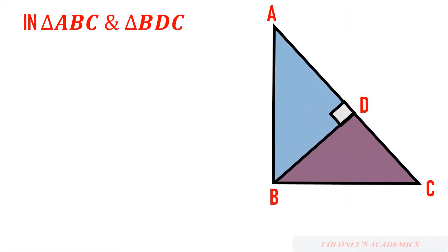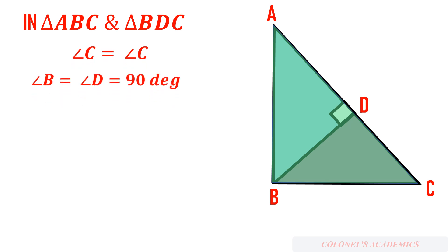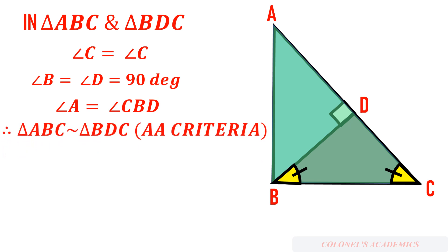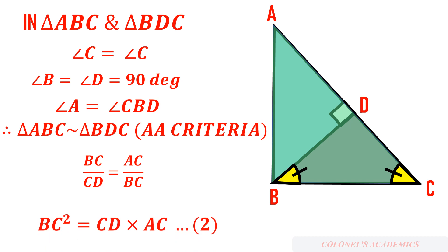Now consider triangles ABC and BDC. Angle C equals angle C, and angle B equals angle D equals 90 degrees. Since two angles are equal, the third angle is automatically equal — angle A equals angle CBD — so triangle ABC is similar to triangle BDC by the AA criterion. Therefore BC/CD = AC/BC, which gives BC² = CD × AC.